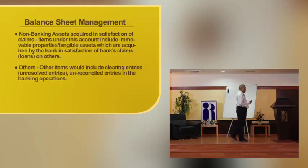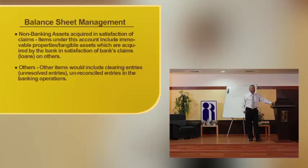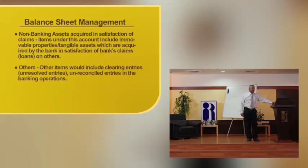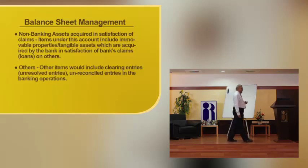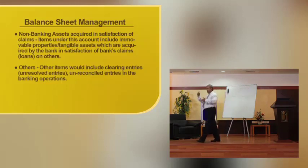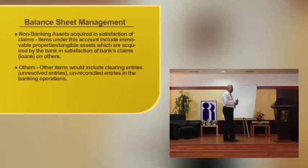This is what the Banking Regulation Act says. These will be items under this account — immovable properties and tangible assets which are acquired by the bank in satisfying its claims. Then, coming to other items: other items include clearing entries, unresolved trade entries, unreconciled entries, or box entries in other items. Any asset which is not forming part of the fixed assets discussed or other categories — if it does not have the capacity or character to be part of those — it will go into other items.